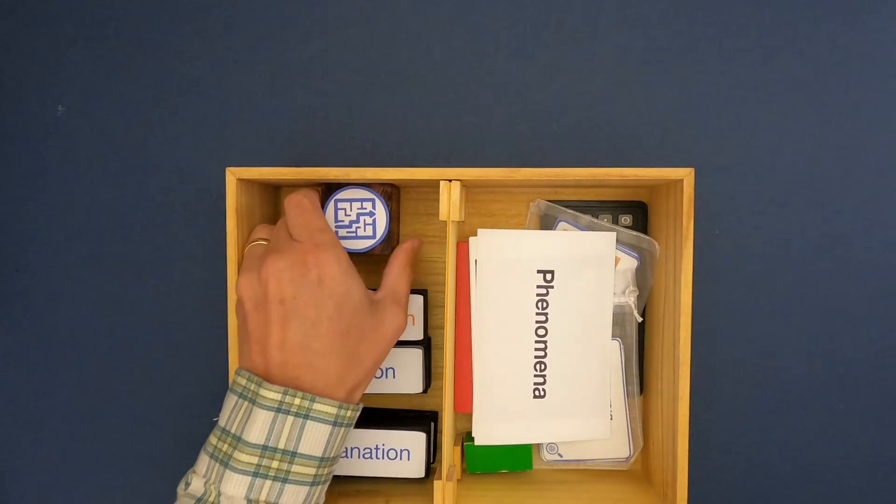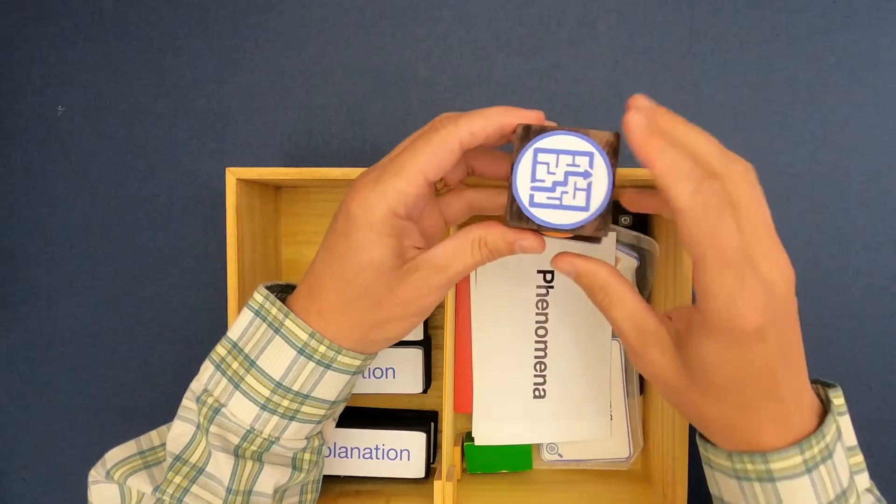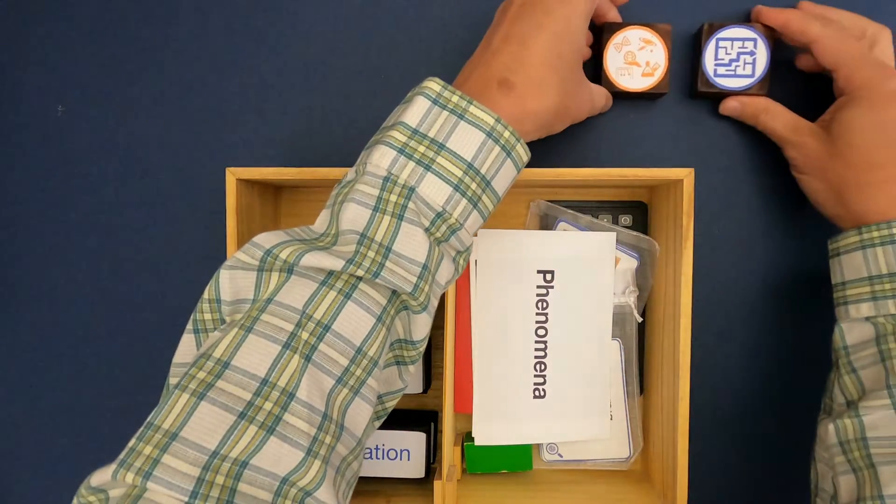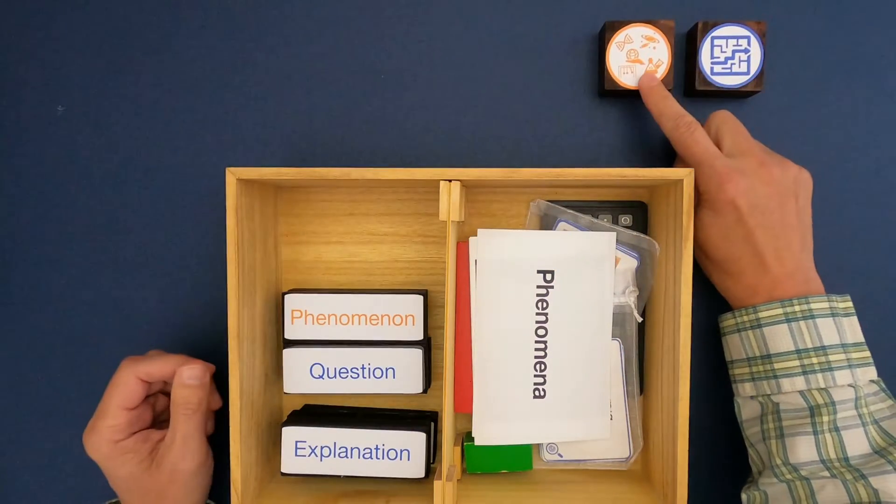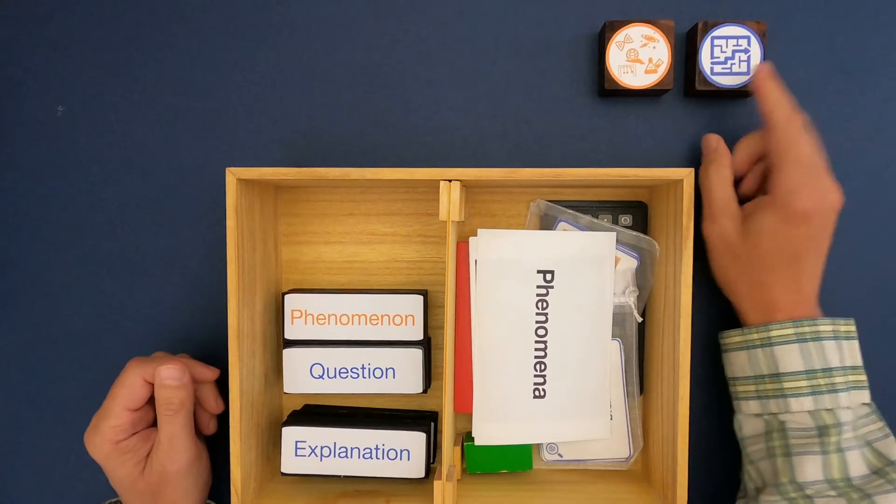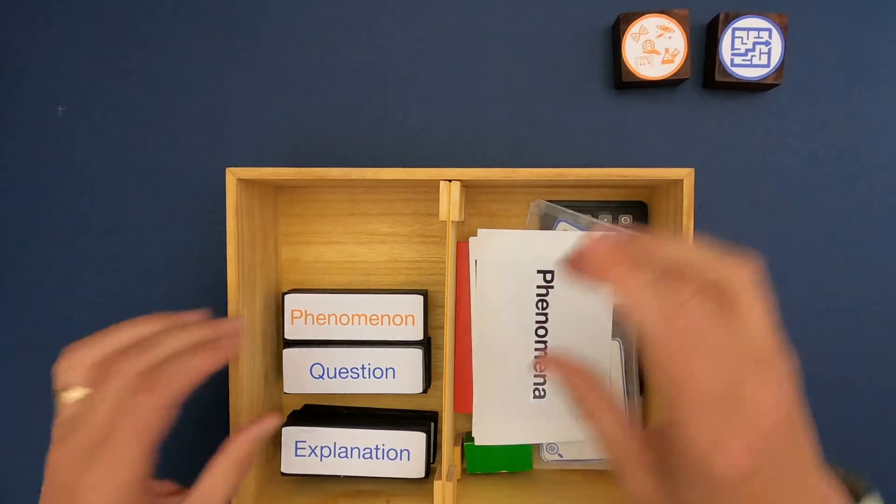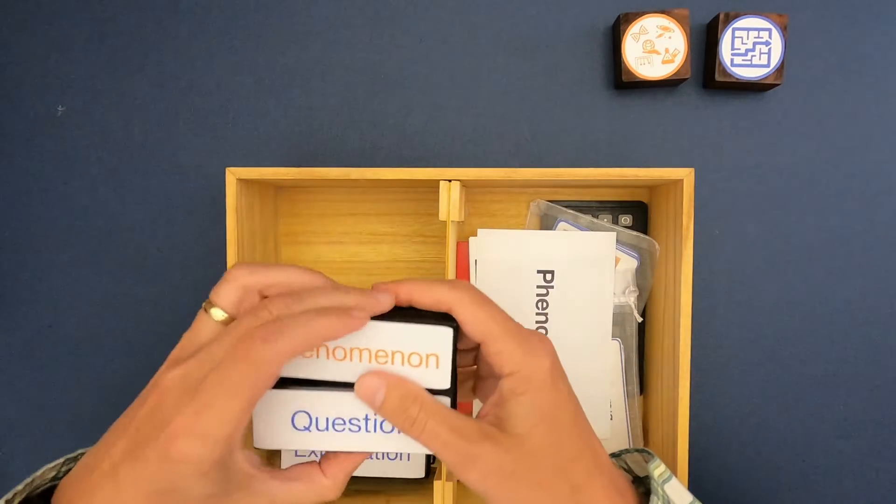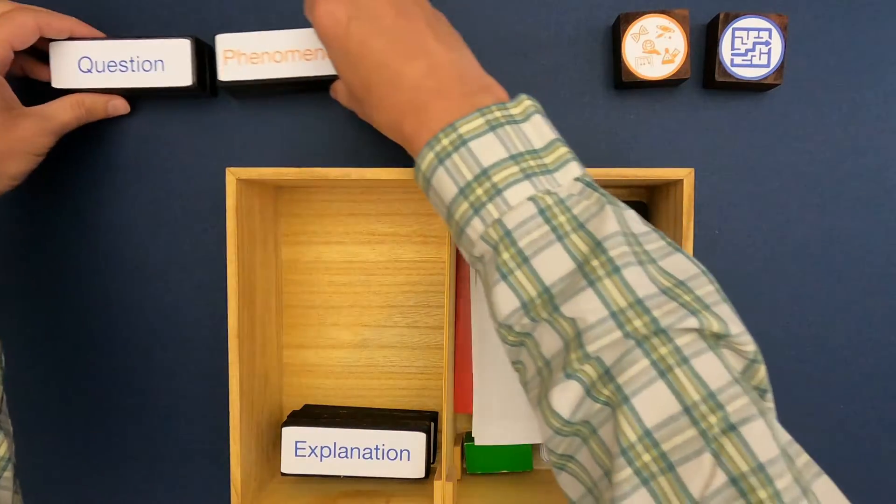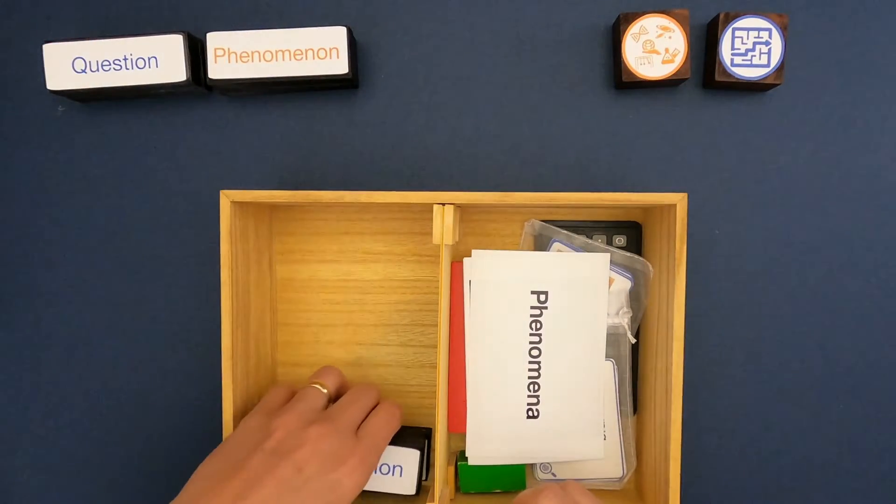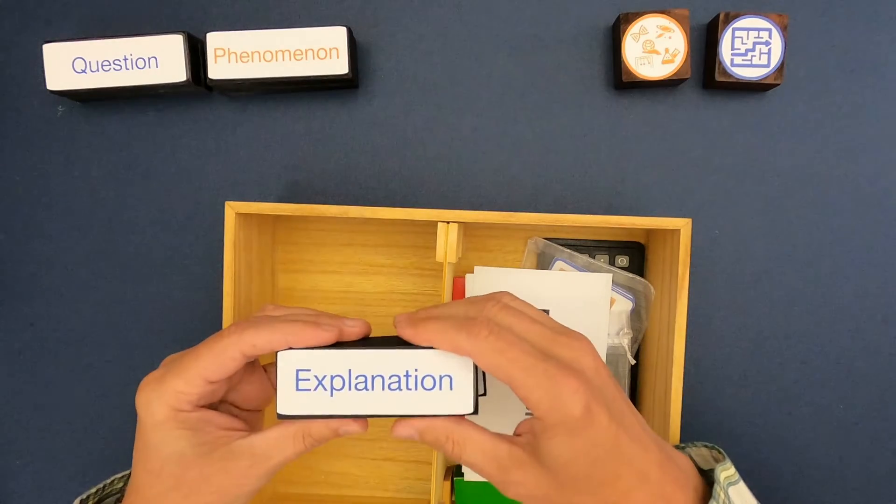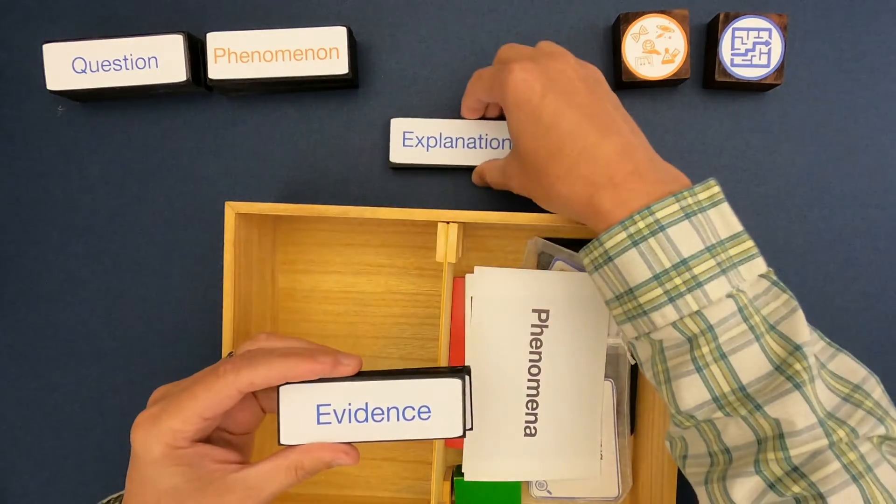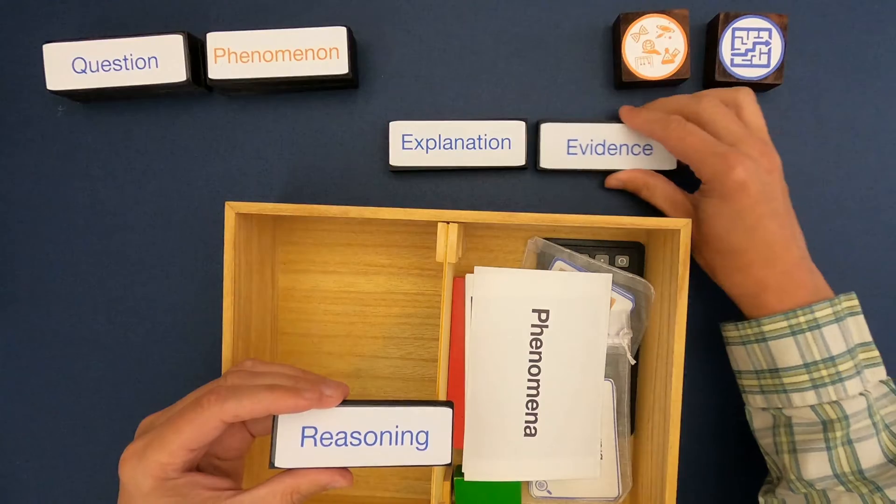The icon for explanations is always solving a puzzle because that's what we try to do in science. We try to figure out in a phenomenon what's causing that phenomenon. In this video we're going to talk about not only the phenomenon and the question we're trying to answer, but how do we build an explanation that's based in evidence.